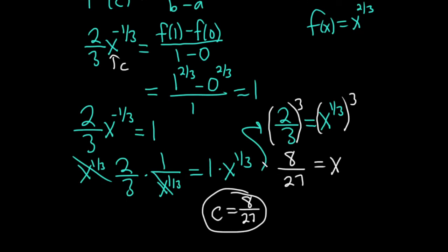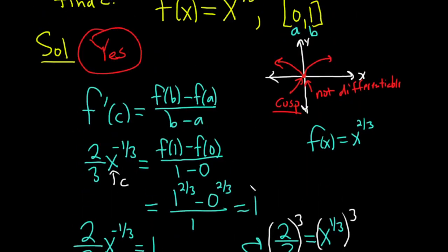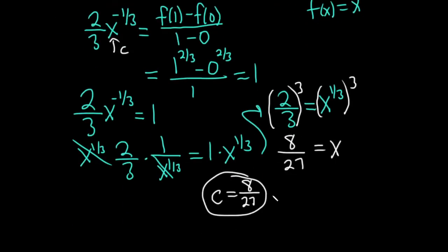I hope this video has been helpful. So that's the answer. Oh, always check that your answer is good. So is it between zero and one? Yeah, it is, right? Eight over 27 is smaller than one and it's bigger than zero. So all is good. Good luck.